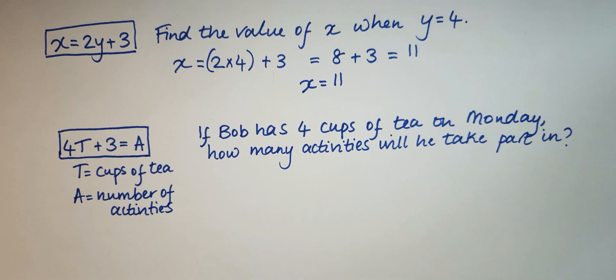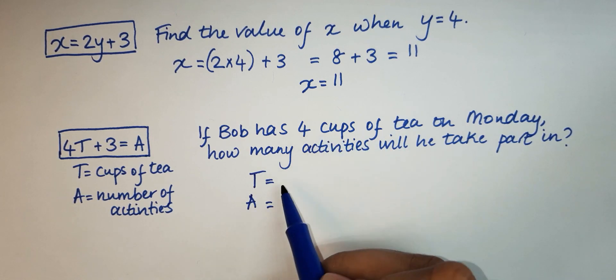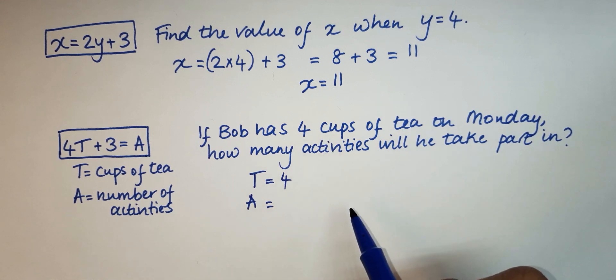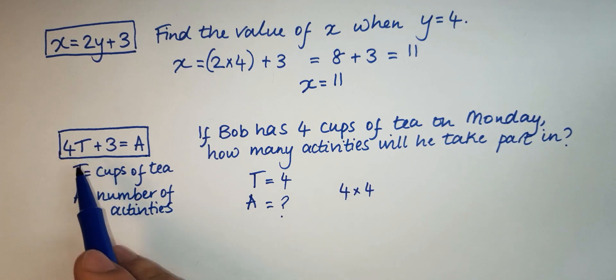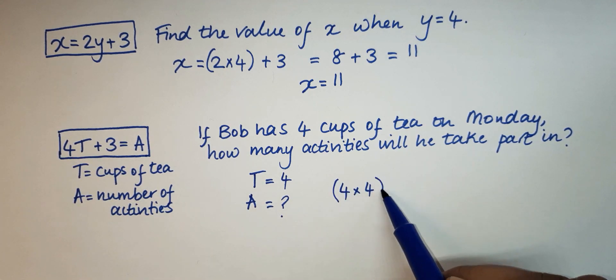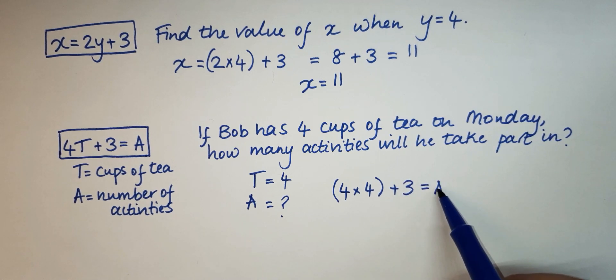And these type of questions, normally you just take out numbers from the question, numbers out of the given information, and you plug it into the formula that's given. So here we have T and we have A. So T will be equal to 4 because he has four cups of tea, and we're trying to find out the activity. So we just do 4 times 4, because 4 times T, and we add 3, which is equal to our A.